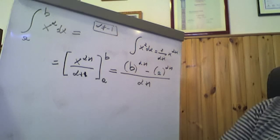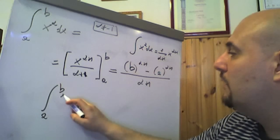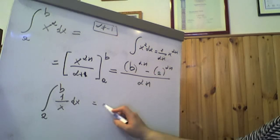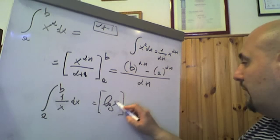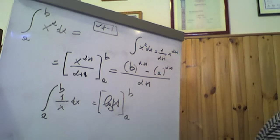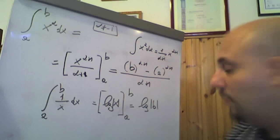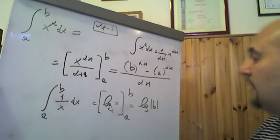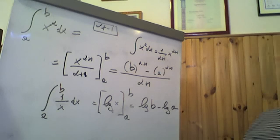Notiamo che se α invece è pari a -1, abbiamo che x alla -1 significa calcolare l'integrale tra a e b di 1/x dx. L'integrale indefinito di 1/x ha come primitiva il logaritmo del valore assoluto di x. Quindi se a e b sono positivi, si ha che l'integrale fra a e b di 1/x dx sarà il logaritmo di |x| valutato tra a e b, ovvero il logaritmo di b meno il logaritmo di a. Ecco l'utilità soprattutto in fase applicativa del teorema che abbiamo appena enunciato.